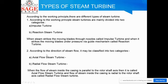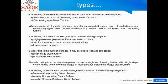According to the direction of steam flow, steam turbines may be classified into two categories: axial flow steam turbine and radial flow steam turbine. When the flow of steam inside the casing is parallel to the rotor shaft axis, it is called an axial flow turbine. When the flow of steam inside the casing is radial to the rotor shaft axis, it is called a radial flow turbine.